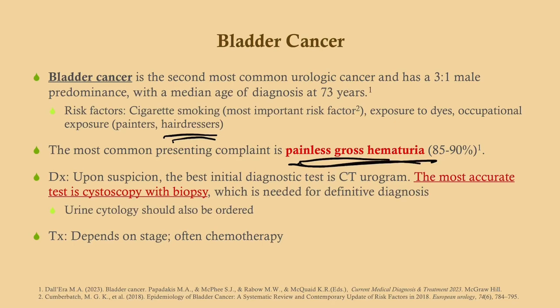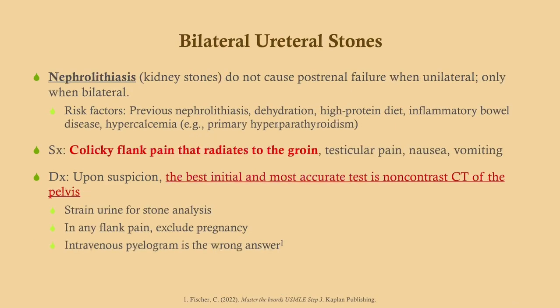Bilateral ureteral stones are fairly uncommon — nephrolithiasis is usually unilateral. Risk factors include prior kidney stones, dehydration (from urinary saturation), high-protein diet (due to oxalate), inflammatory bowel disease (increased oxalate reabsorption as calcium saponifies with fat), and hypercalcemia. Symptoms include colicky flank pain radiating to the groin or testicles, nausea, and vomiting.